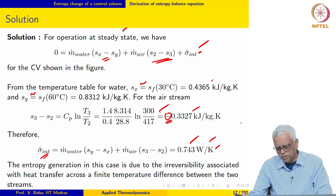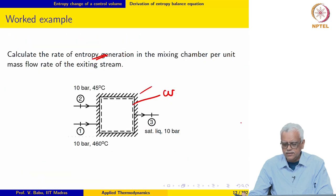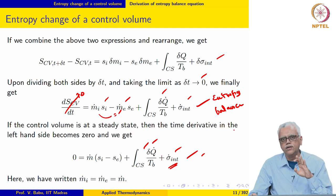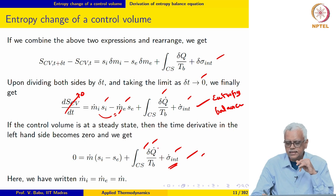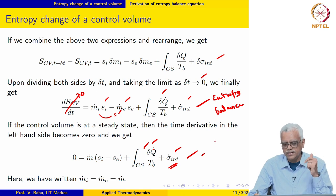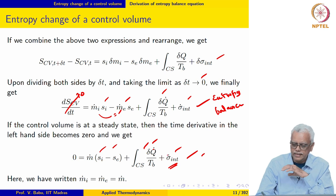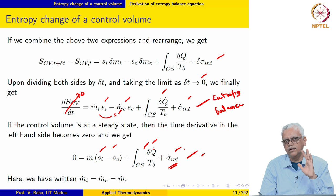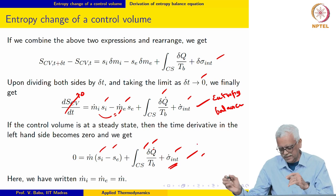This equation we derived is useful specifically for calculating σ̇_int for special cases where the device is either insulated or operates at a constant temperature. Knowing the inlet and exit states, σ̇_int may be evaluated using the entropy balance equation. There is no closed form for evaluating σ̇_int; it has to be calculated indirectly like this.